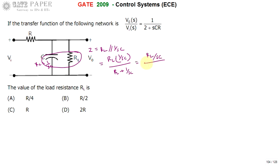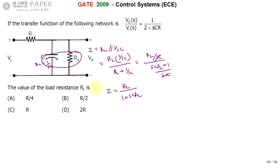The sC terms cancel, so Z equals RL divided by (1 + sCRL). This is our impedance Z value.